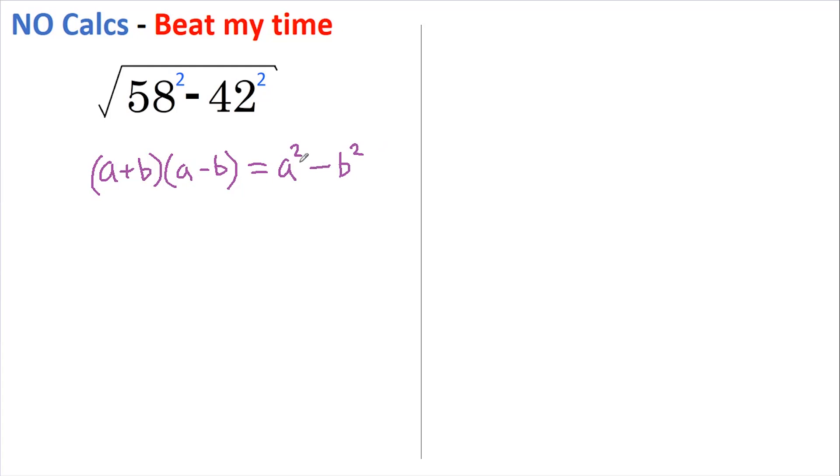with the difference between two squares. That means whenever you see anything like this, you can rewrite it like this, and that's the trick to solving this fast. Let's do this. We can rewrite this as 58 minus 42